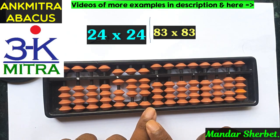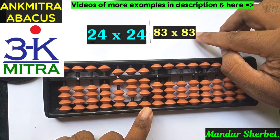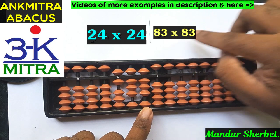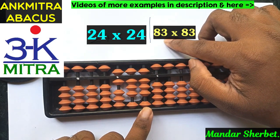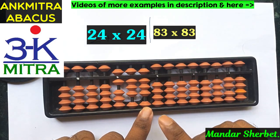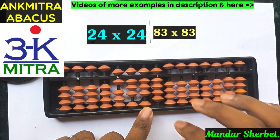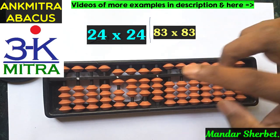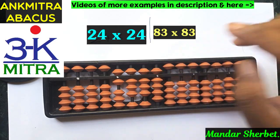Now moving one place to the right to the second rod, I take 3 multiplied by the units place 3. So 3 multiplied by 3 is 09 — remember it's a two-digit number, so we take 09: zero on the second rod and nine on the first rod. The final answer for 83 multiplied by 83 is 6889 — six thousand eight hundred and eighty-nine.